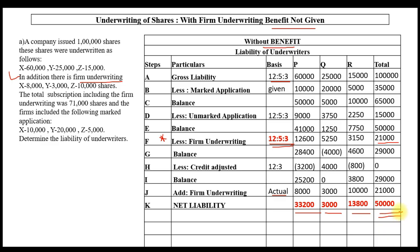Add back actual firm underwriting — 8,000, 3,000, 10,000. Final net liabilities: X = 25,200 + 8,000 = 33,200; Y = 0 + 3,000 = 3,000; Z = 3,800 + 10,000 = 13,800. Total = 50,000. Notice the total net liability of 50,000 remains the same whether benefit is given or not — only the individual distributions differ. For 7 or 10 mark sums do one method; for 15 or 20 marks, do both.